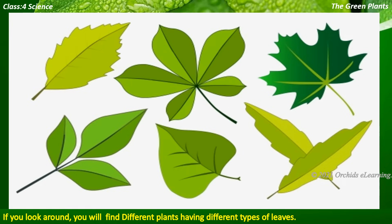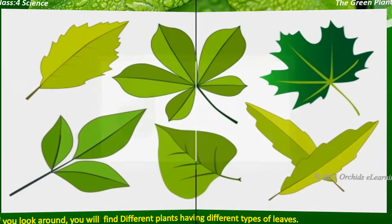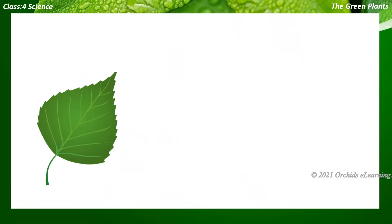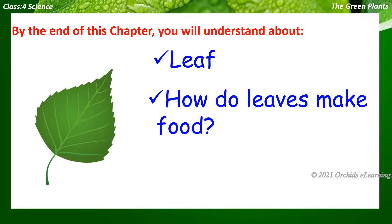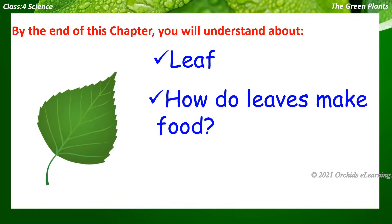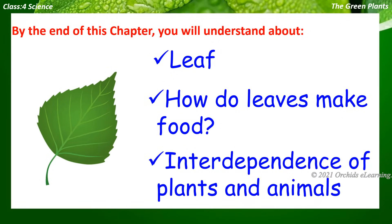Let us learn more about the leaf of a plant. By the end of this chapter, you will understand about the leaf, how do leaves make food, and the interdependence of plants and animals.